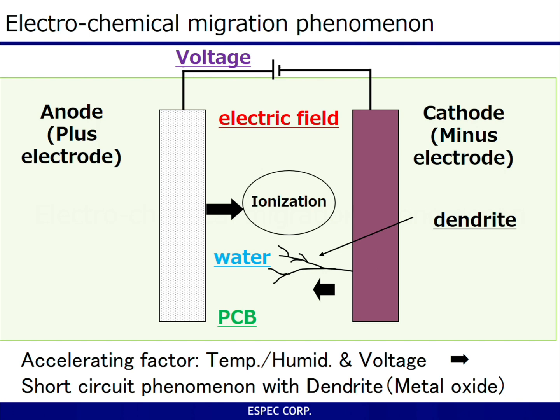Dendrites are very thin and brittle with very low current-carrying capacity. Because of this, the short circuit formed by these dendrites may burn itself off. Since short circuits occur instantaneously, it is difficult to capture this phenomenon by removing the sample and measuring its resistance. This is where a real-time measurement under temperature and humidity conditions is required.